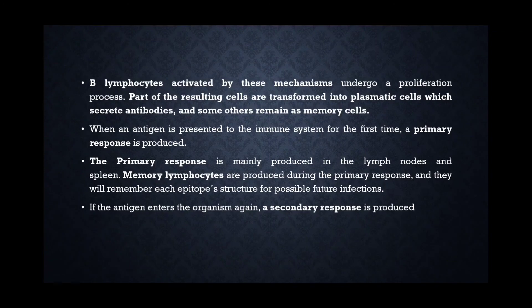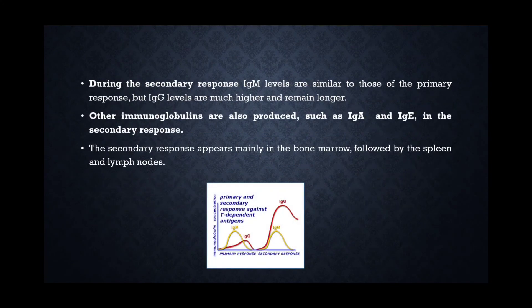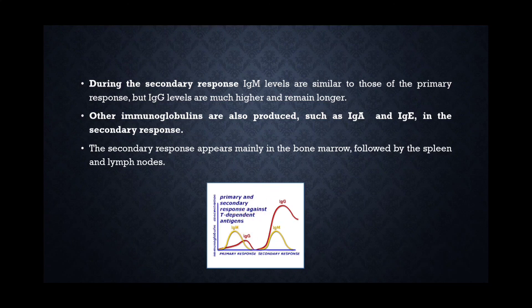If the infection enters the organism again, the secondary response is produced. During the secondary response, the immunoglobulin M levels are similar to those of the primary response, but IgG levels are much higher compared to the primary response. Other immunoglobulins are also produced, such as IgA and IgE, in the secondary response. The secondary response mainly appears in the bone marrow, followed by the spleen and lymph nodes.